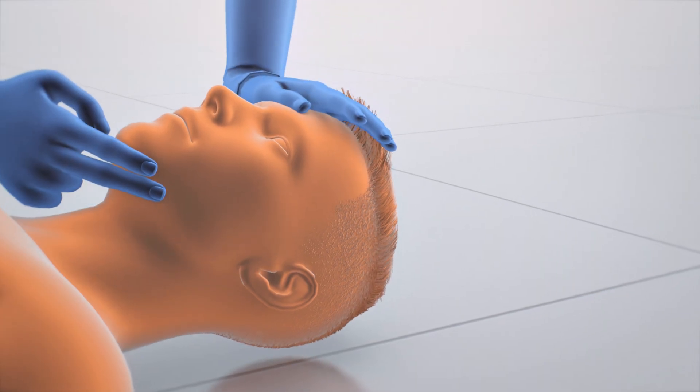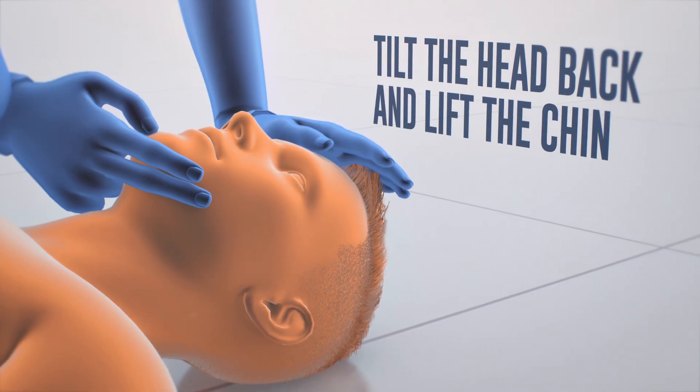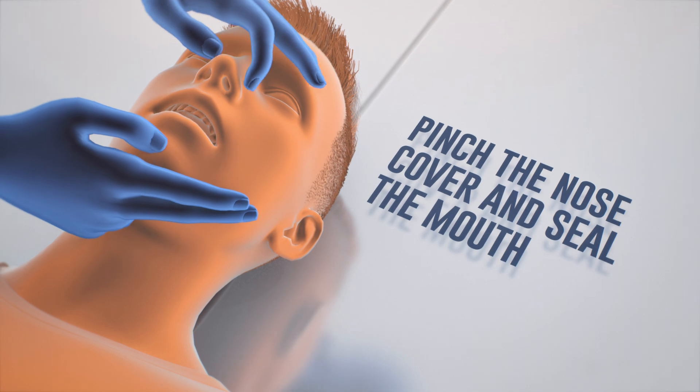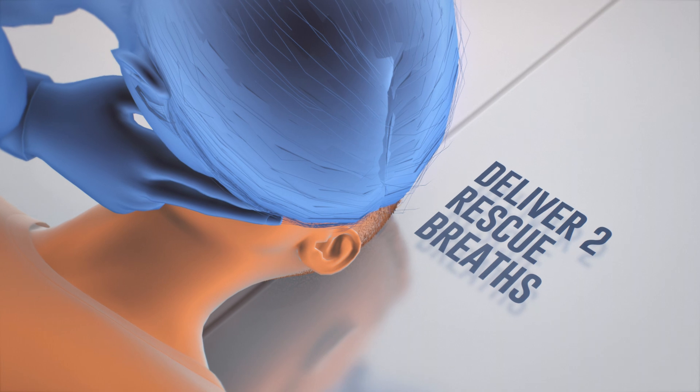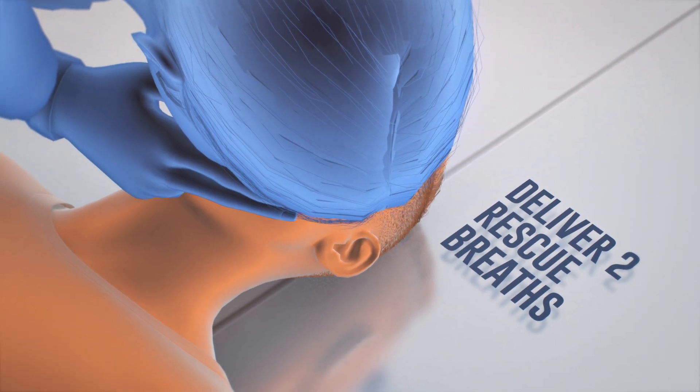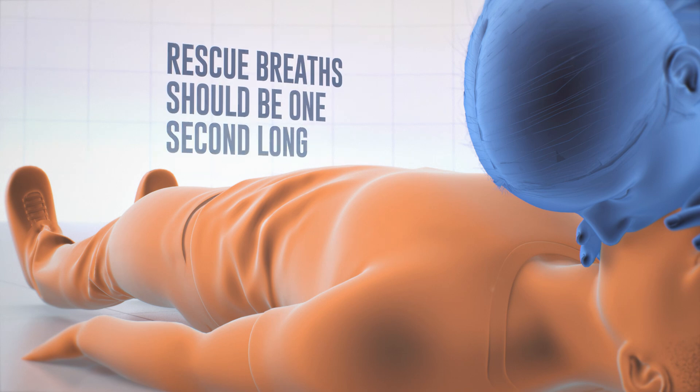After 30 compressions, move quickly to open the airway by tilting the forehead back and lifting the chin towards the ceiling. Pinch the nose shut and place your open mouth over the person's mouth and make a tight seal. Blow a breath into the person's mouth to make their chest rise. Allow the person to exhale in between your breaths. Rescue breaths should be one second long.